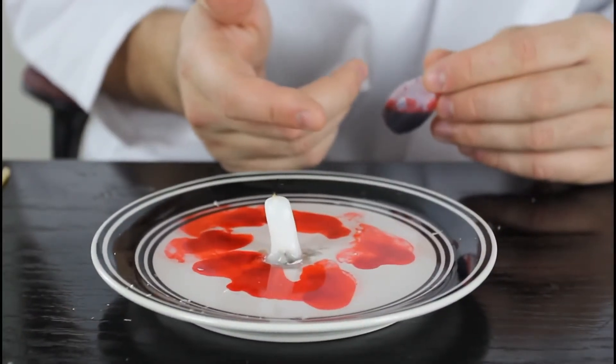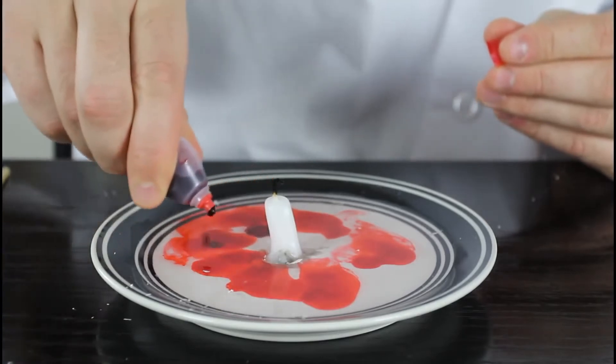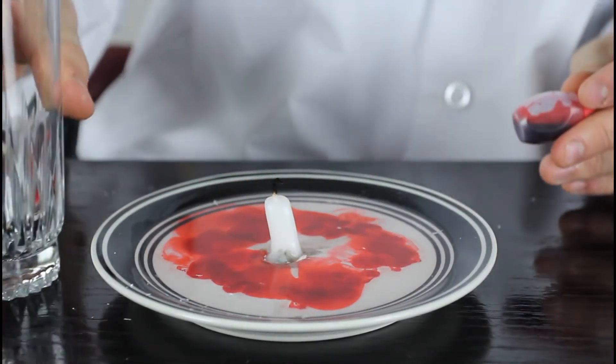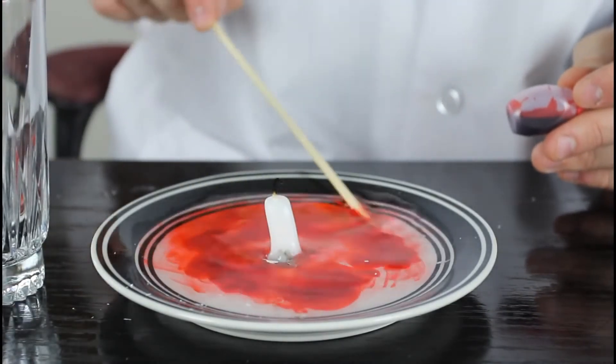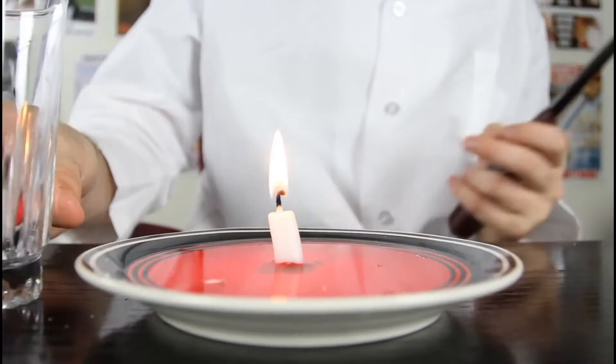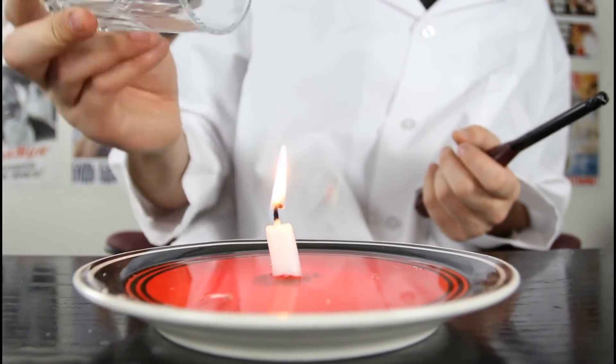Alright, for this experiment we're gonna need candle, plate, water in a plate, food coloring, I got the red because it looks awesome. And then you're gonna need a glass and a lighter, of course. Gonna mix it up. And then we're gonna light up the candle and then we're gonna put the glass over the candle and see what will happen.